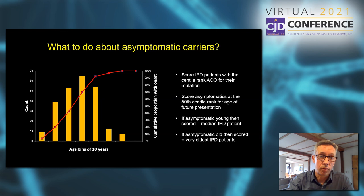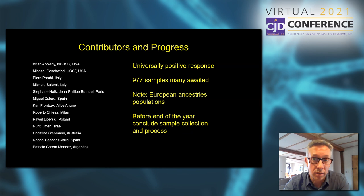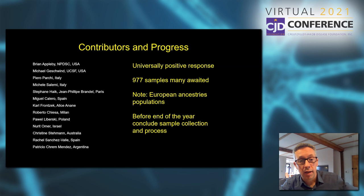Where are we at the moment? We're in a phase of collecting samples from around the world. I'm really pleased to report a pretty much universally positive response to the request to join forces and do this research together. We have 977 samples already — the target is 1,000 — and there are more due to arrive, so I'm confident we'll hit our target. I expect before the end of the year we will conclude the sample collection part of the project and go on to processing the genome-wide arrays.